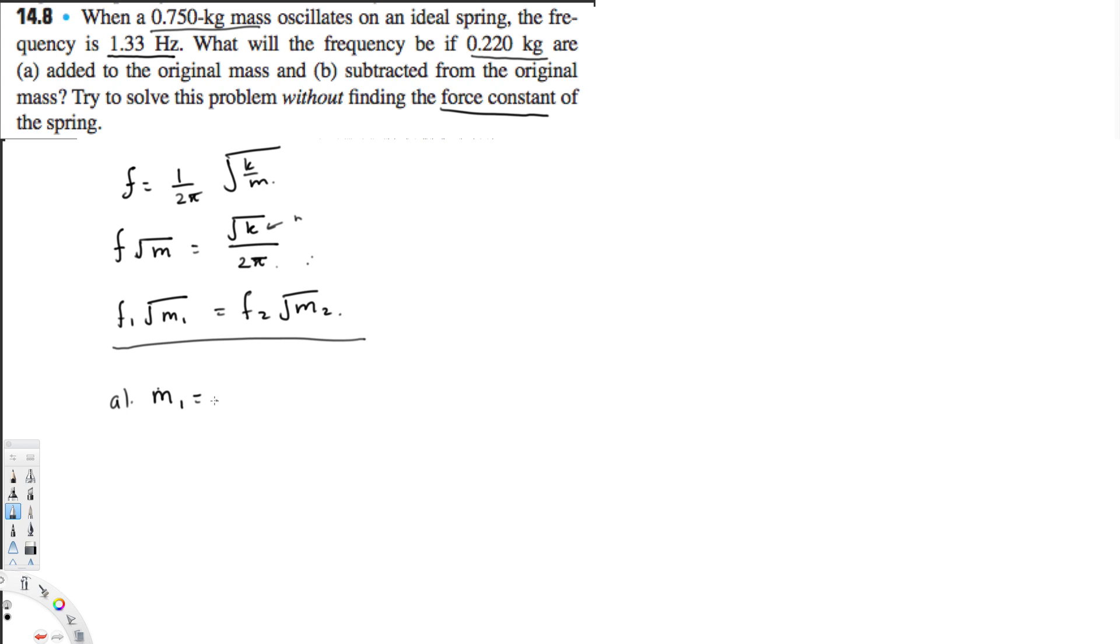is the situation where we're adding these two masses together: 0.75 plus 0.22, which gives us 0.97 kilograms. Now we have all the information. All we have to do is substitute into this equation.